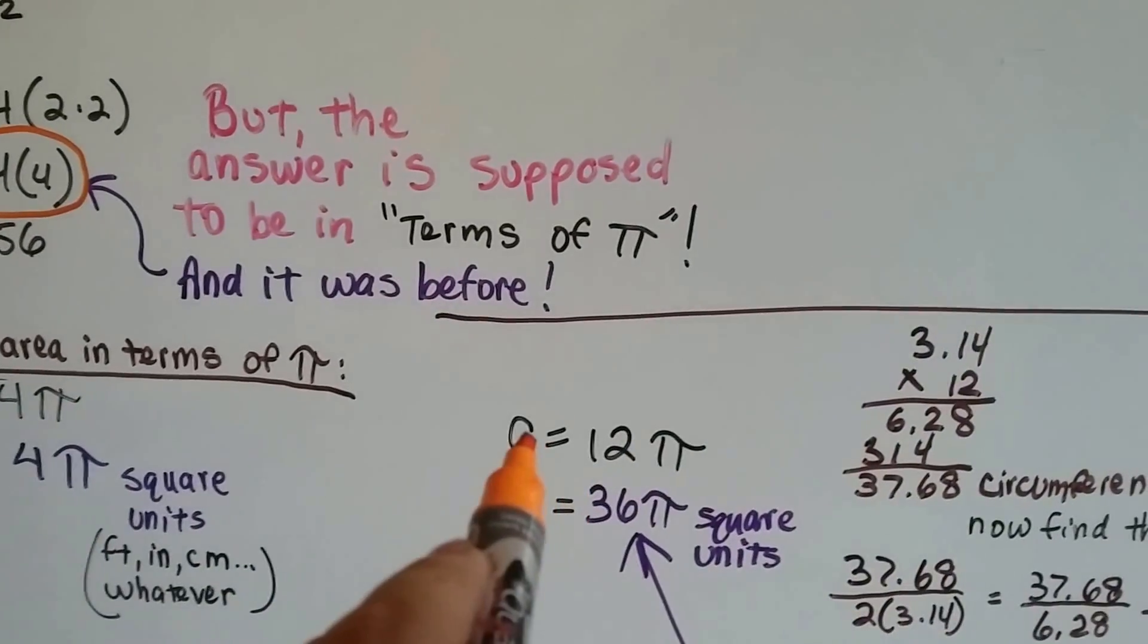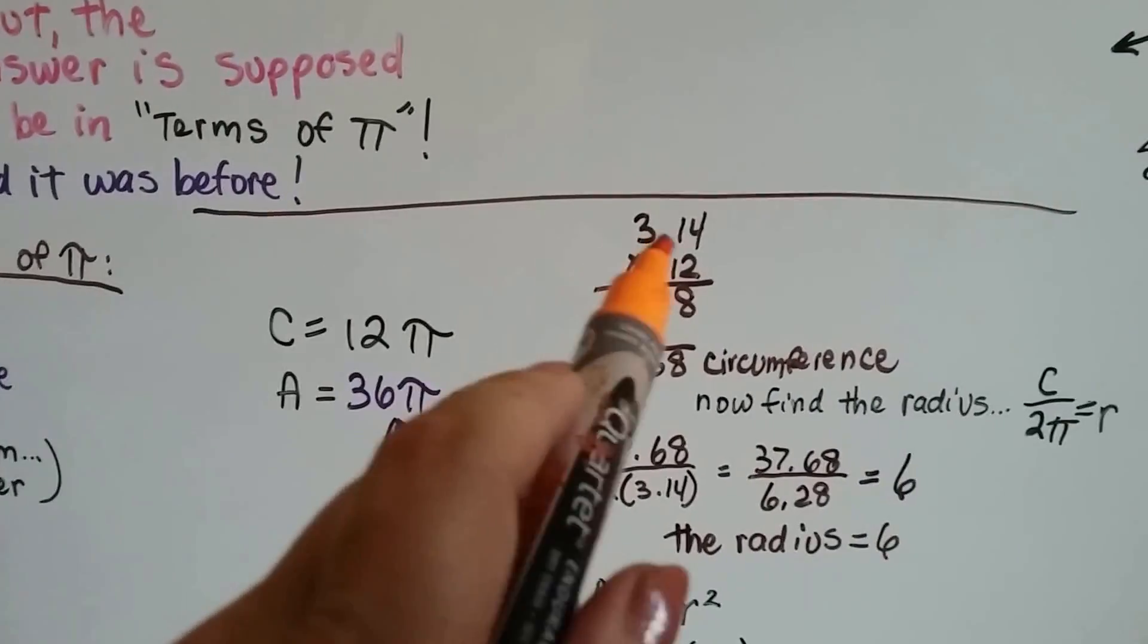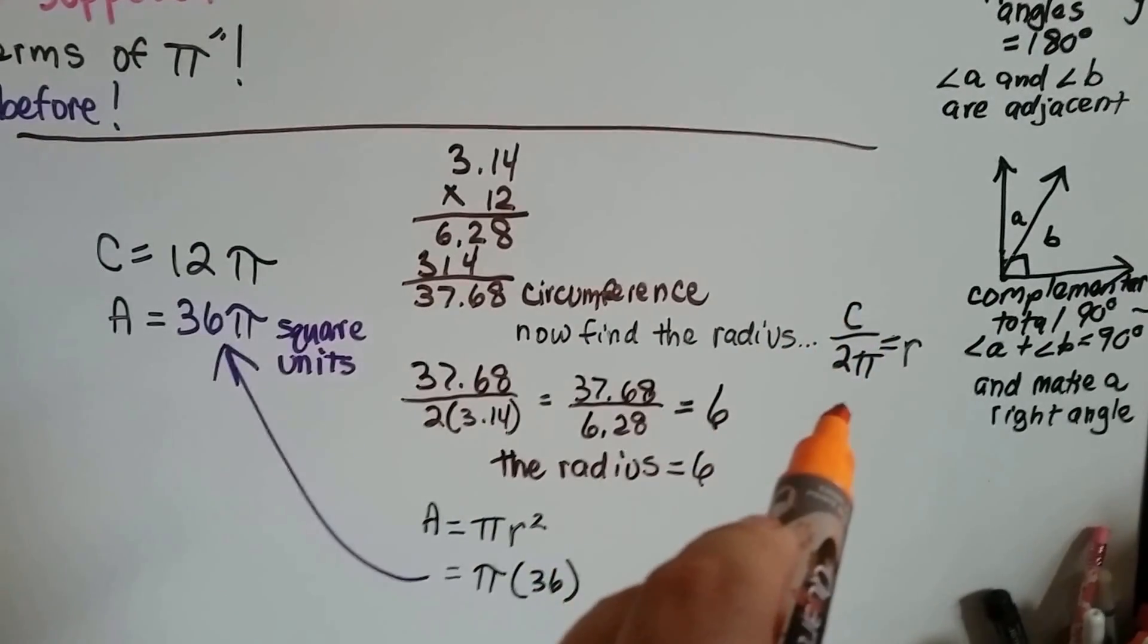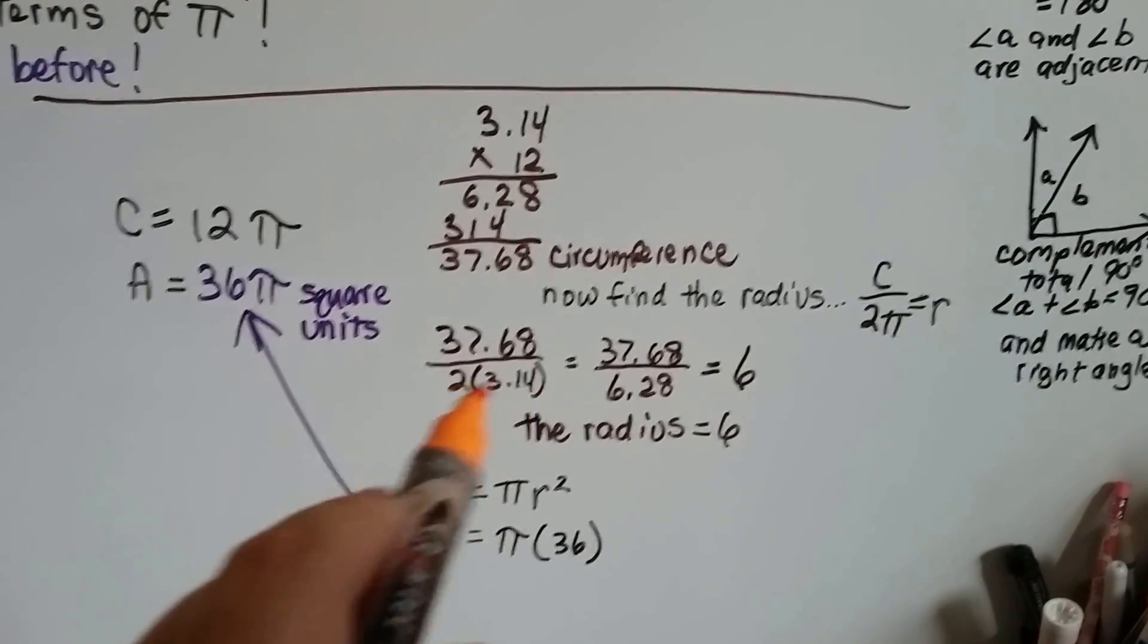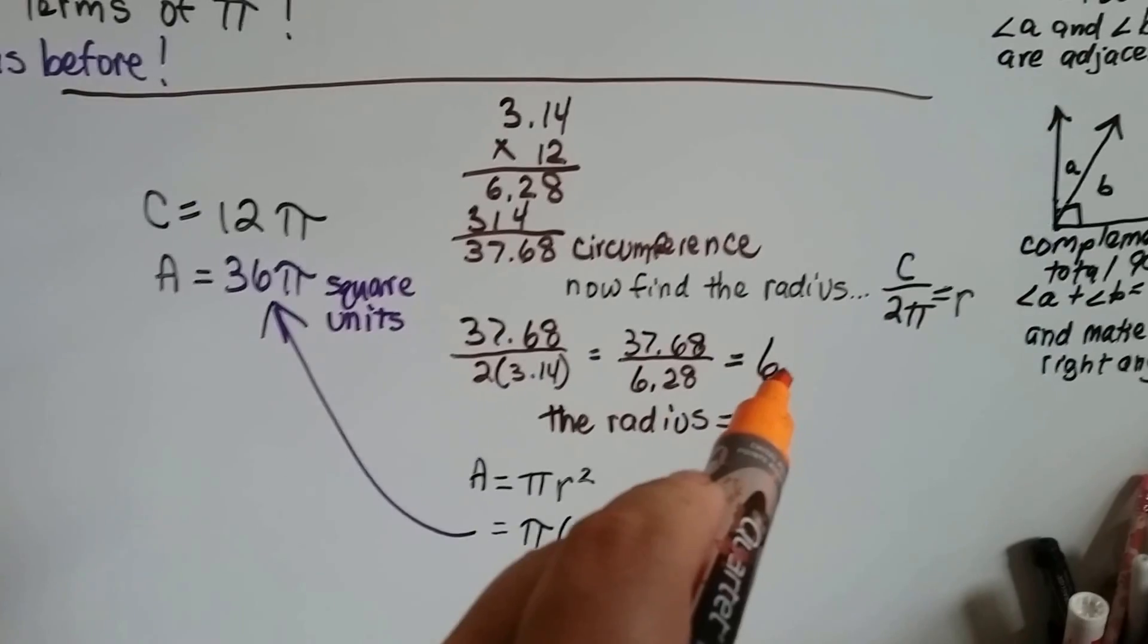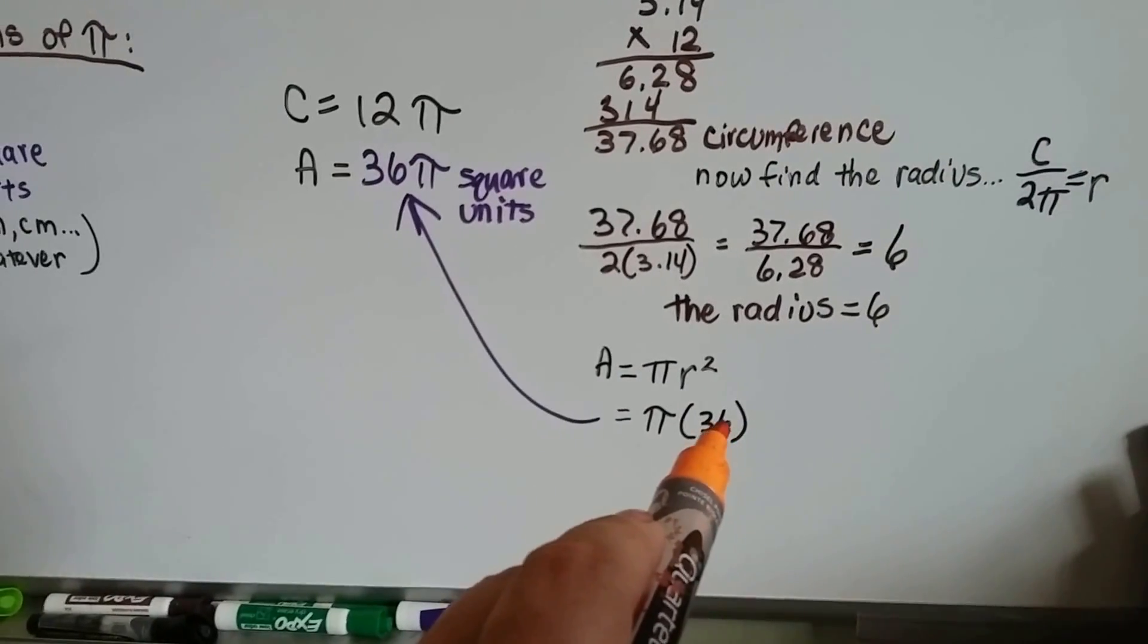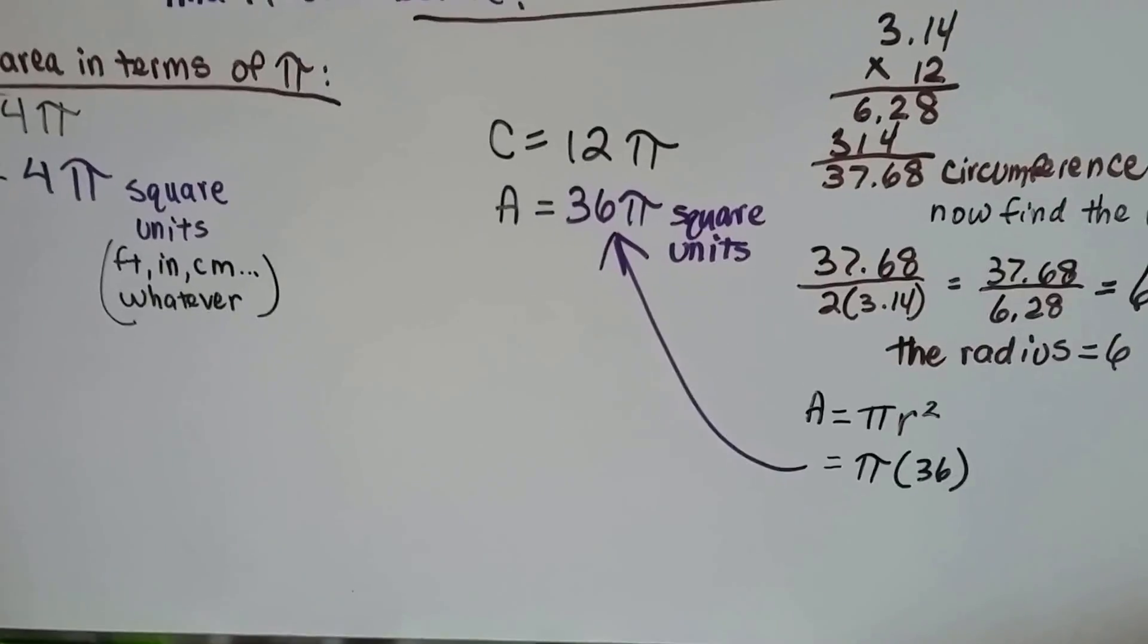Now, what if it said that C is equal to 12 pi and it needed the area? Well, we just do 12 times pi, 3.14, and we get 37.68 is the circumference. Now, we find the radius, because we know the circumference, and we use the C over 2 pi equals the radius, and we put the 37.68 over the 2 pi. That becomes 37.68 over 6.28. When we do this division, we get a 6, so we know the radius is 6. Since the radius is 6, and we know that area equals pi r squared, that means pi times 36 is going to give us the area. Well, we don't need to do this, do we? Because we need to have the answer in terms of pi. Our answer is 36 pi square units. See?